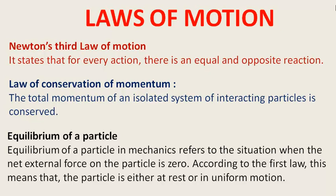Equilibrium का मतलब है कि अब हमारे पास equality आ चुकी है और इस state ने further नहीं बदलना। Mechanical equilibrium का मतलब है — there is no net force and no net torque। क्योंकि अगर force या torque बचेगा, तो acceleration होना चाहिए। इसलिए जब भी कोई body uniform speed पर है, वो equilibrium में है क्योंकि उसपर net force 0 है।